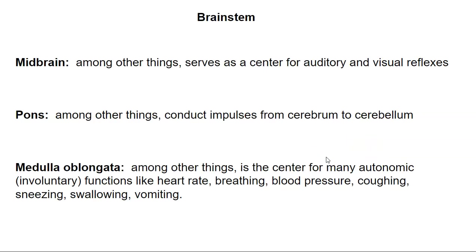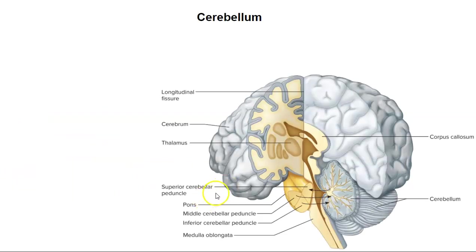The medulla oblongata is the most inferior portion of the brainstem. It is the center for many autonomic — meaning involuntary — functions like heart rate, breathing, blood pressure, coughing, sneezing, swallowing, and vomiting. Things we don't have control over, like breathing, are regulated by the medulla oblongata. Below the medulla oblongata, it becomes the spinal cord.